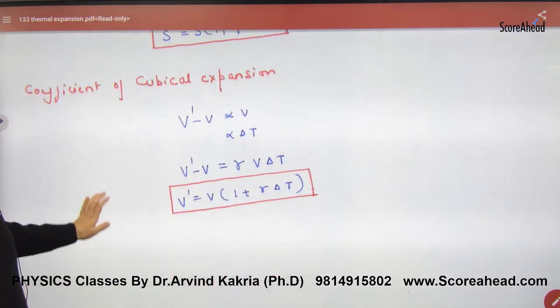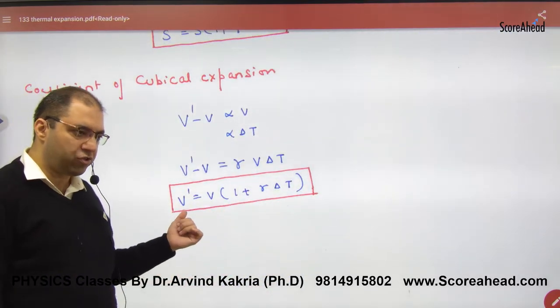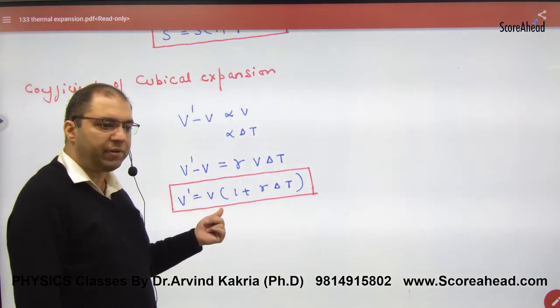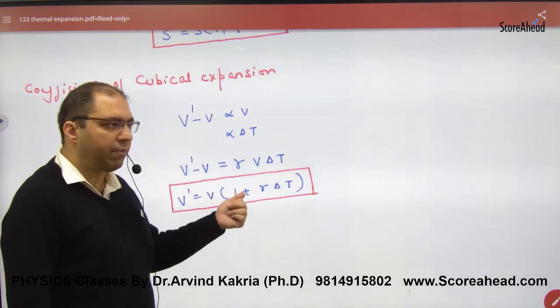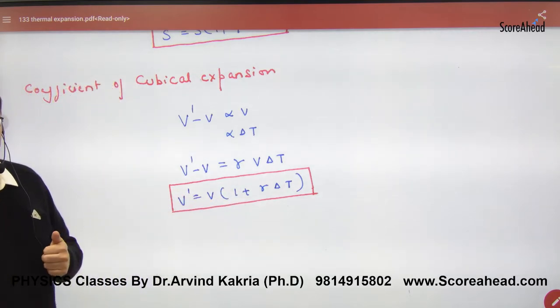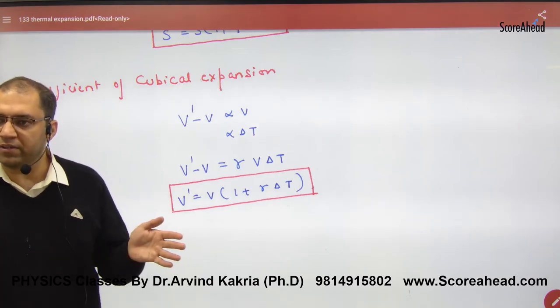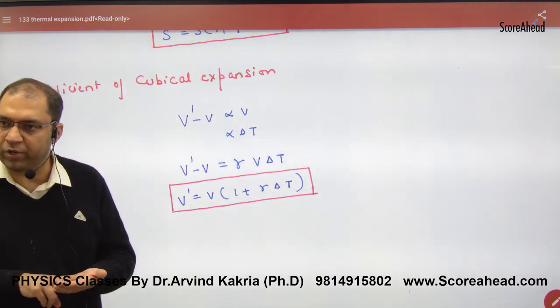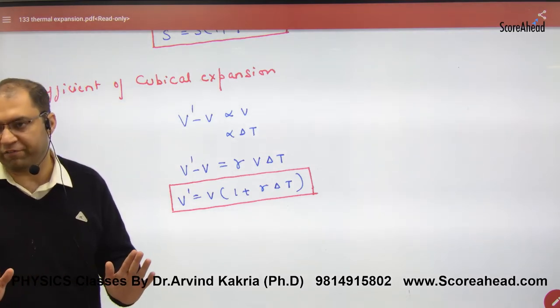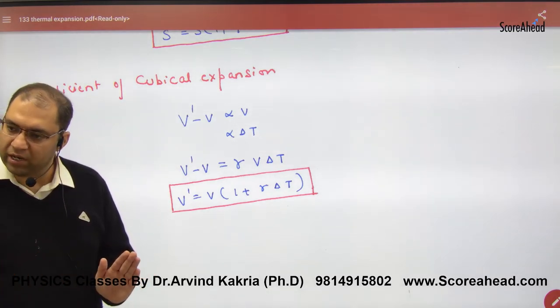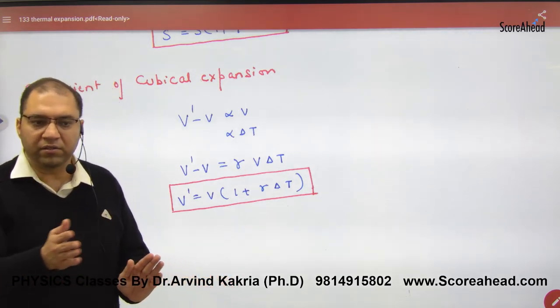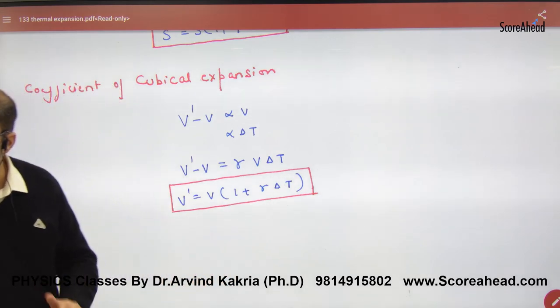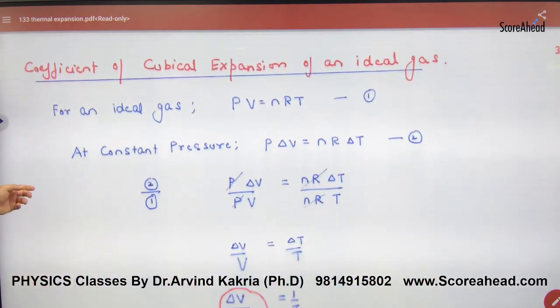Next is cubical expansion. For volume, V' = V(1 + γ·ΔT), where gamma is the coefficient of cubical expansion. If it's lengthwise expansion, alpha is given. For area-wise expansion, beta is given. For volume-wise or cubical expansion, gamma is given. In summary: length relation is L' = L(1 + α·ΔT), surface area is S' = S(1 + β·ΔT), and volume is V' = V(1 + γ·ΔT).